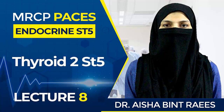What is exophthalmos and proptosis? In exophthalmos, there is protrusion of the eyeball such that the sclera is visible above the lower lid with the eyes in the neutral position. If you ask the patient to look straight forward, the sclera will be visible between the iris and the lower lid. This is called exophthalmos.